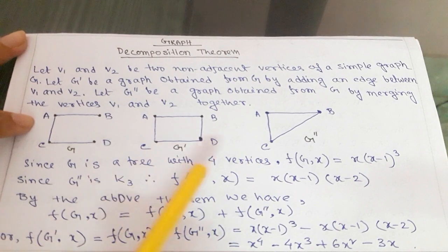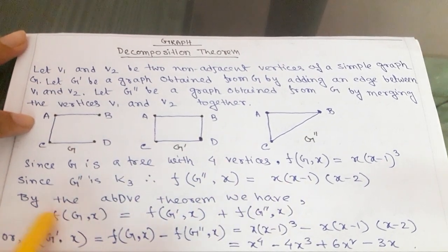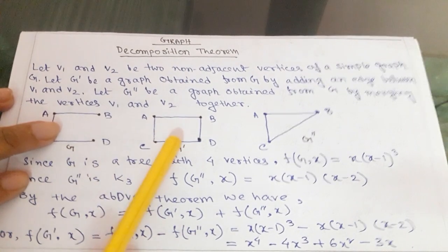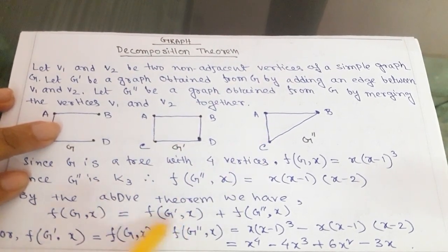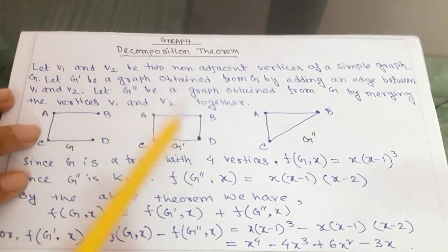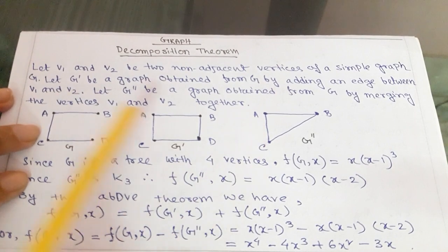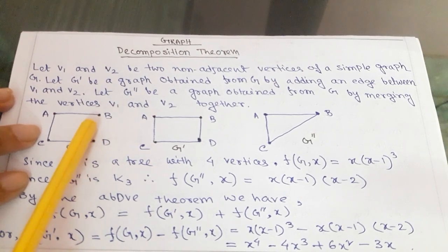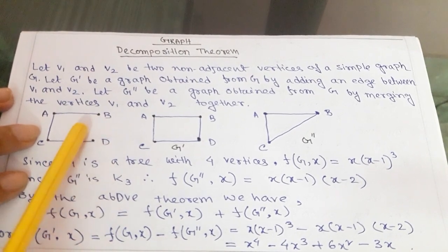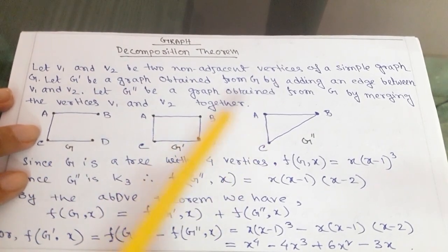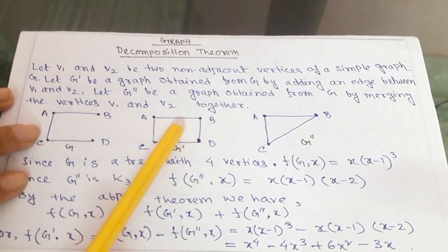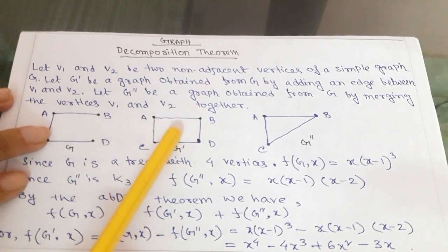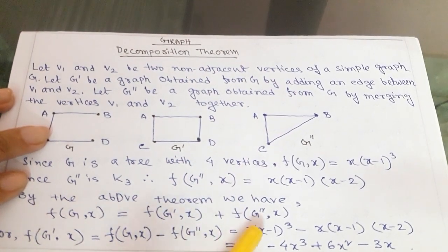So, the polynomial of this theorem can be written as: the chromatic polynomial of graph G equals the chromatic polynomial of G dash plus the chromatic polynomial of G double dash. If you add these two vertices it becomes one graph, and if you merge these two vertices it becomes another graph. These two graphs are part of the original graph G, so the polynomial of G equals the polynomial of G dash plus the polynomial of G double dash.